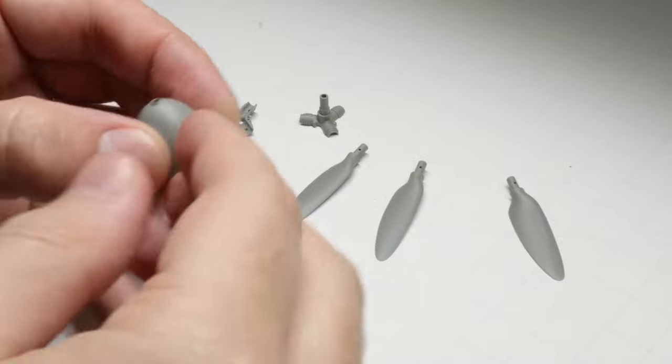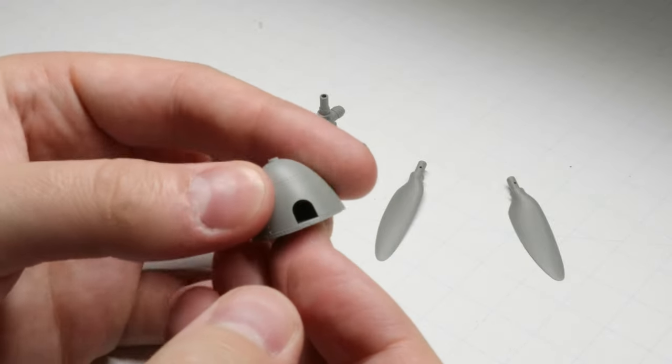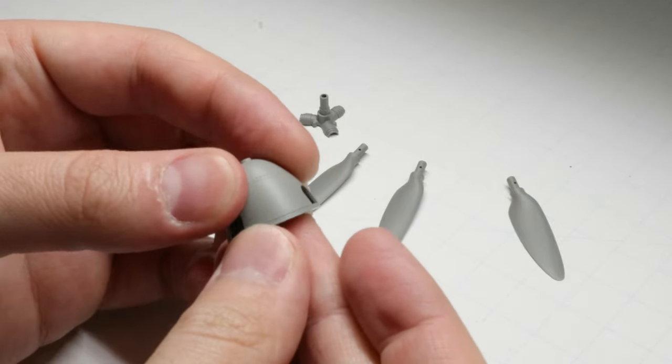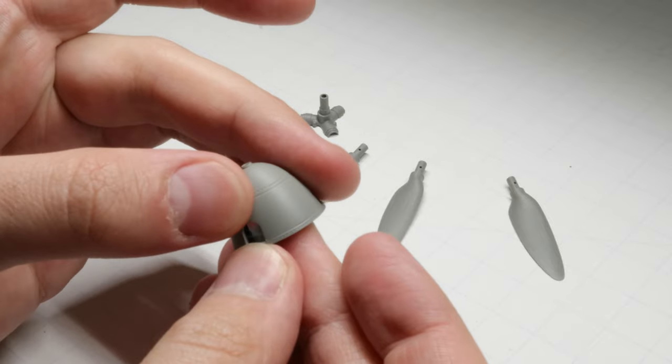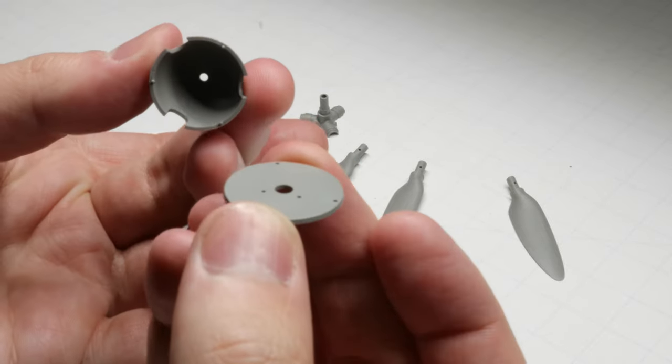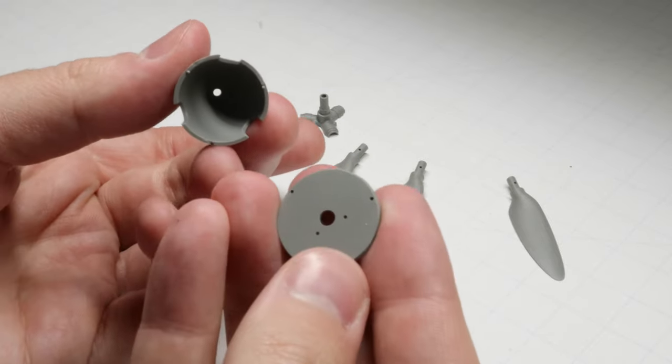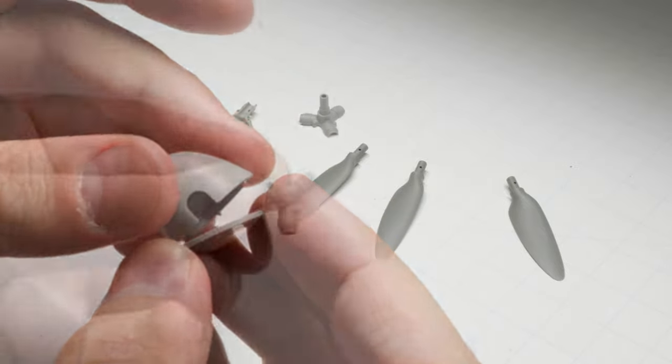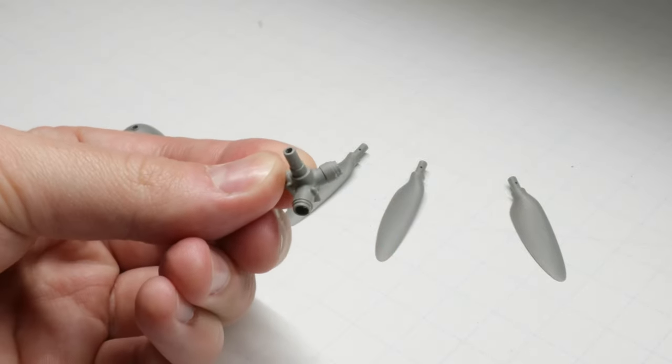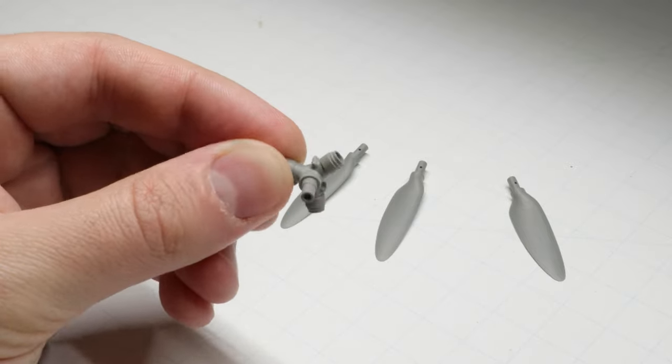I'll be demonstrating this technique on the prop from Border Model's new 1:35 scale BF109G6, but this process can be used on kits of any make or scale. We only have a little prep work to do before we start painting. The prop for this kit comes with three separate prop blades, a two-piece spinner or nose cone, and a two-piece prop hub.